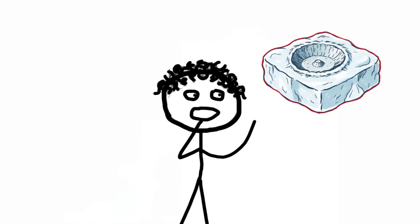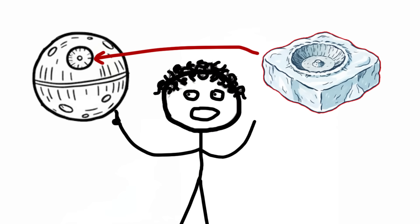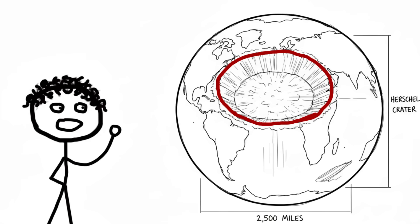But what makes it instantly iconic and honestly a bit unsettling is the colossal planet-killing sized Herschel Crater dominating one side. This impact crater is nearly 86 miles across, almost a third of the moon's entire diameter. To put that in perspective, if a crater of proportional size hit Earth, it would be almost 2,500 miles wide. Say goodbye to continents, not just Alderaan.